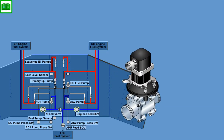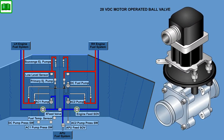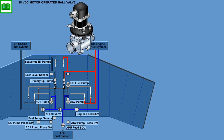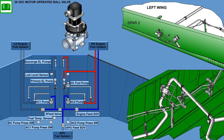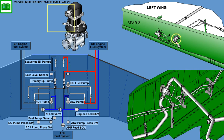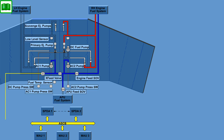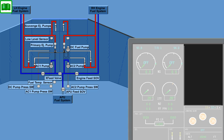A 28-volt DC motor-operated ball valve is installed in each engine feed line to prevent hazardous quantities of fuel from flowing into designated fire zones. The valves, one for each of the two engine feed lines, are mounted on the rear spar of the wing with the hydromechanical portion of the valve inside and the electrical actuator outside of the tank. MAU-1 monitors the status of the left engine feed shut-off valve, while MAU-3 receives position feedback from the right valve. The position of the valves is displayed on the ICUS.